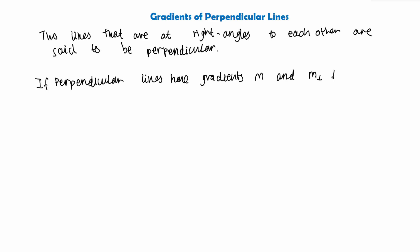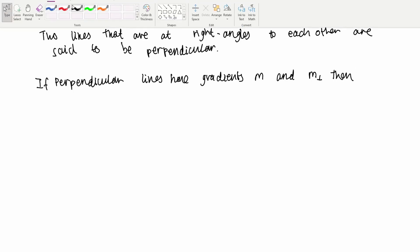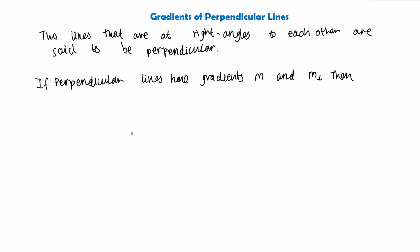So we say that the first gradient m times the second gradient — the gradient of the perpendicular line — is simply equal to negative one. Using this, we can also say that lines are perpendicular if m times the gradient of the perpendicular line equals negative one.